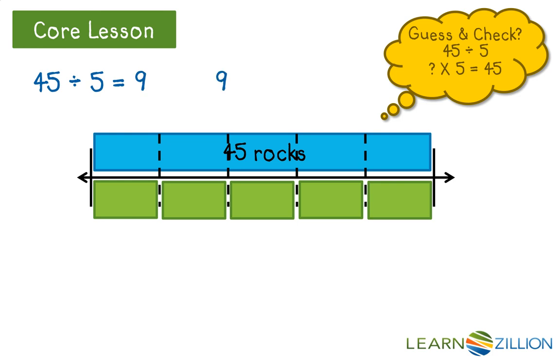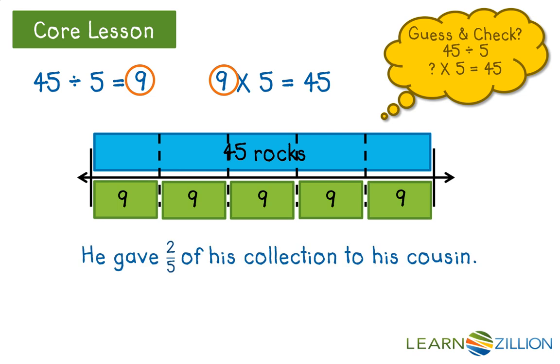I can check it with 9 times 5, yep, that equals 45. So now I see that 9 belongs in each box, and each 1 fifth is equal to having 9 rocks. So let's go back and look at the question. It said he gave away 2 fifths of his collection to his cousin. So I'm going to box in 2 fifths, or 2 out of the 5 boxes, and cross them out, because that helps me represent that he's giving those away.